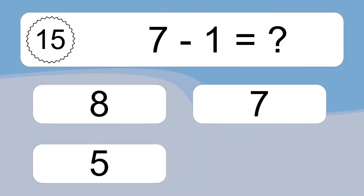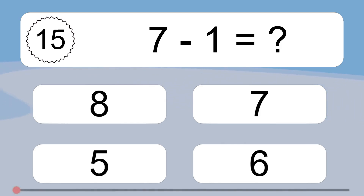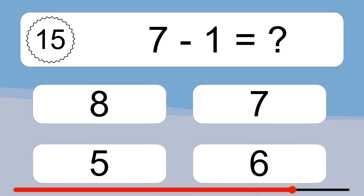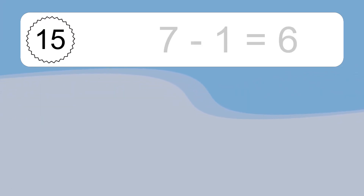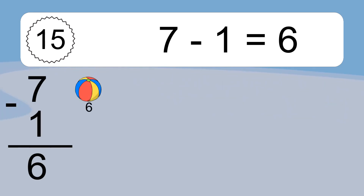7 minus 1 equals what? 7 minus 1 equals 6. Let's count it: 6.